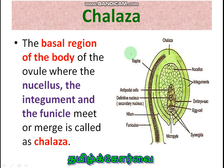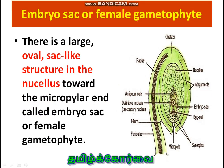Next, chalaza is the point where three structures — nucellus, integument, and funiculus — meet or merge. This point is usually in the inverted ovule present just opposite to the micropyle. The embryo sac is otherwise called as female gametophyte. The ovule is the Megasporangium and embryo sac is the female gametophyte. Within the nucellus, towards the micropyle end, what is present is called as embryo sac — it is a more or less oval-shaped structure.